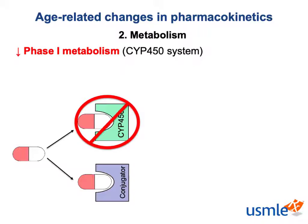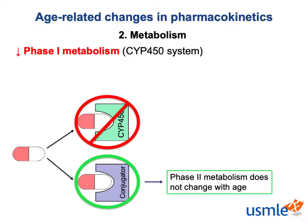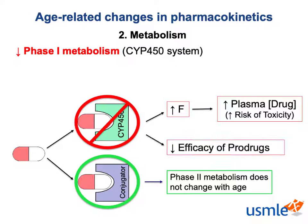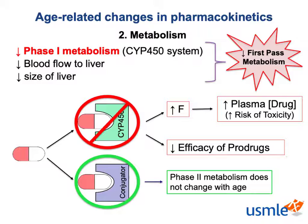Phase II metabolism transforms drugs into highly polar, often inactive compounds for primarily renal elimination, and is not affected by aging. Due to this decrease in Phase I metabolism, drugs that undergo significant Phase I metabolism may have a higher bioavailability and may reach higher plasma concentrations in elderly patients. Because the hepatic clearance of these drugs is prolonged, these patients are at a higher risk of drug toxicity. Similarly, drugs that are absorbed in a prodrug form and require CYP450 enzymes to transform the prodrug into an active metabolite will be less efficacious. Other age-related changes include an overall decrease in perfusion of the liver and a decrease in the overall size of the liver. The cumulative effect is that older patients experience decreased first-pass metabolism, and a lower therapeutic dose of many drugs may be sufficient in elderly patients.